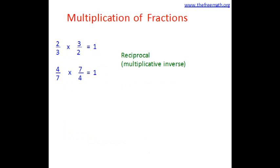So 3 over 2 is the reciprocal of 2 over 3, and 4 over 7 is the reciprocal of 7 over 4. Let's multiply these pairs: 2 over 3 times 3 over 2 gives 6 over 6, which equals 1. Similarly, 4 over 7 times 7 over 4 gives 28 over 28, which equals 1. So when a fraction is multiplied by its reciprocal, the answer is 1. If two fractions multiply to give 1, they are reciprocals or multiplicative inverses of each other.